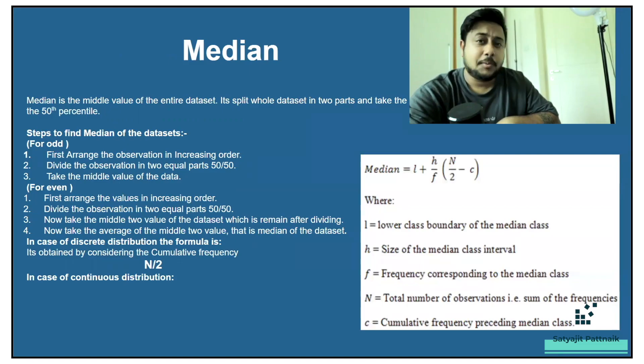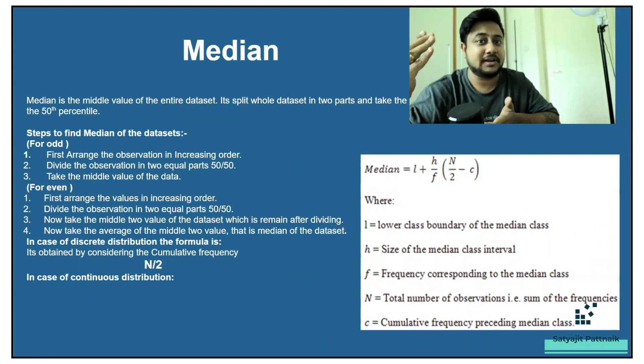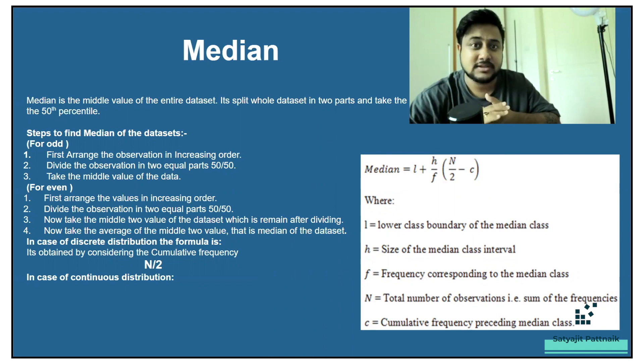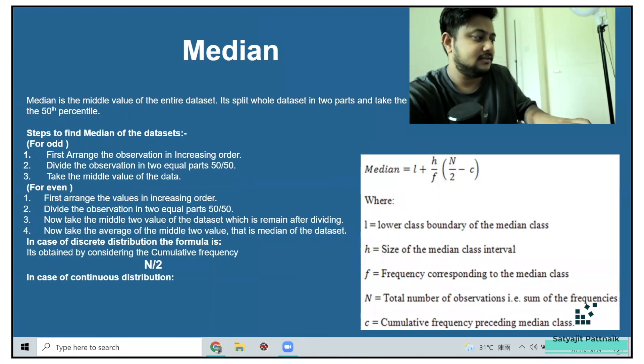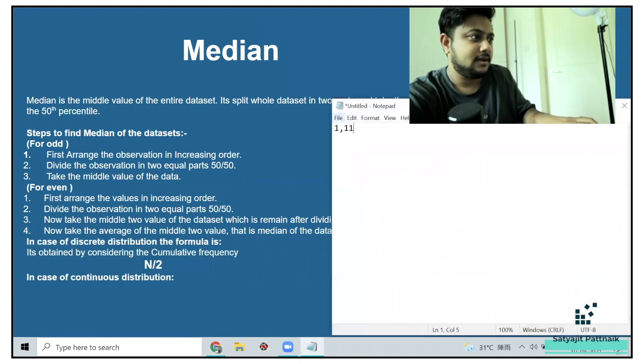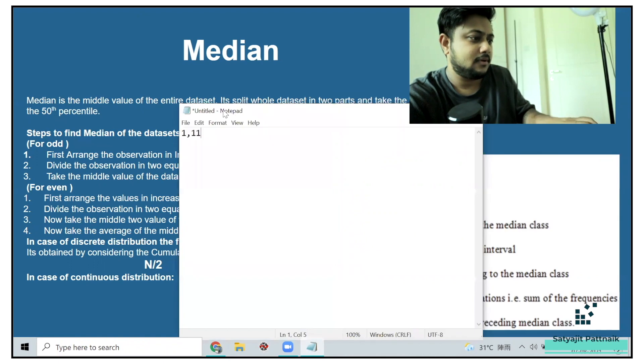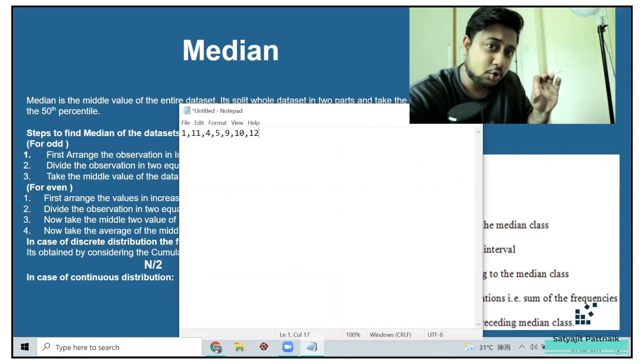Now talking about the next concept, which is going to be median. What is a median? Median is exactly the middle value of a data set. It splits whole data set into two parts and takes the middle value. Let's say you have numbers like this: 1, 11, 5, 4, 9, 10, 12, something like this. So what is going to be the middle value?